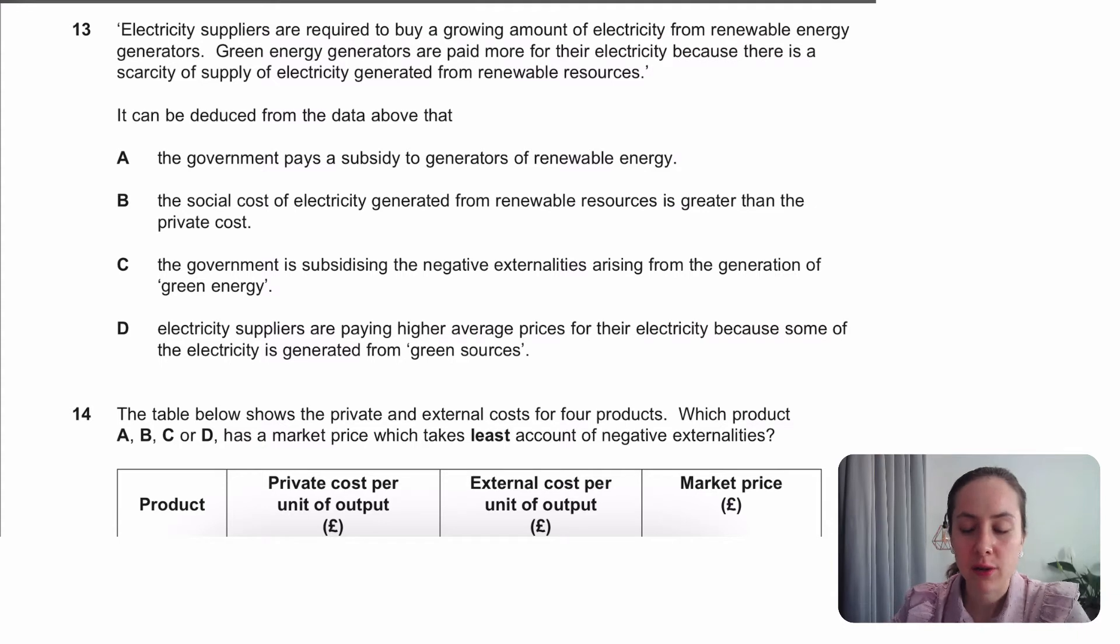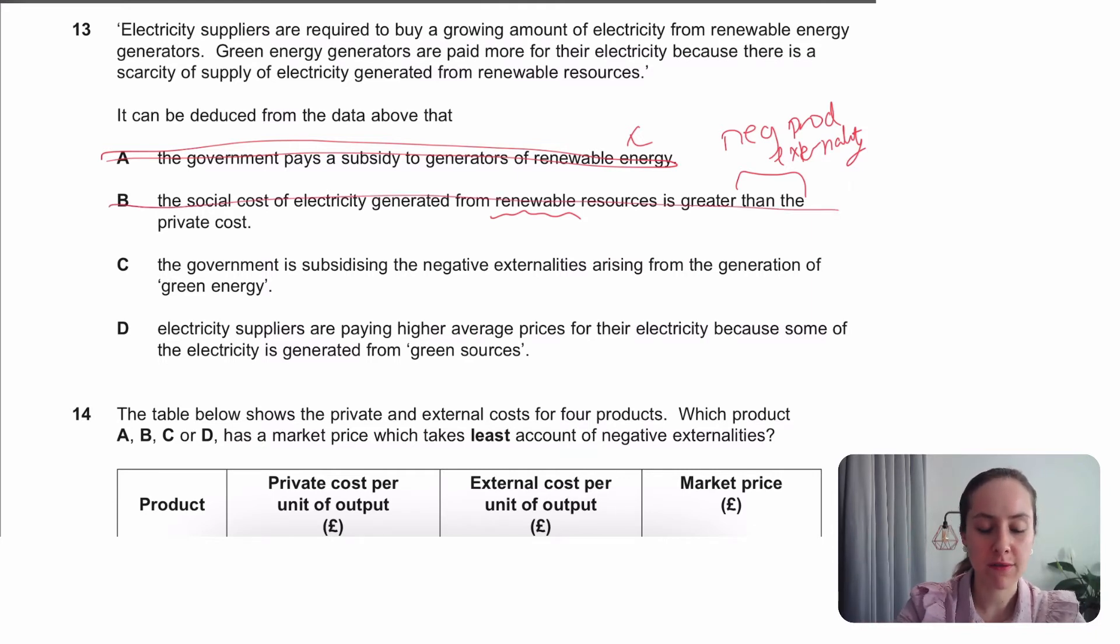Electricity suppliers are required to buy a growing amount of electricity from renewable energy generators. Green energy generators are paid more for their electricity because there is a scarcity of supply generated from renewable resources. This is a comprehension question. They're going to do something, sometimes very subtle to say if they said it or not. So let's take a look at A. A says the government pays the subsidy to renewable energy. We don't believe it actually ever mentions the government. The social cost of electricity generated is greater than the private cost. So this would mean it's a negative production externality. And let me just check if they say that. That's from renewable resources. I mean, it seems unlikely, but let's take a look. It doesn't say anything about social costs, private costs. Government is subsidizing and didn't say anything about that again. So the answer is not that one.